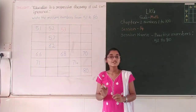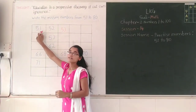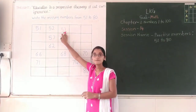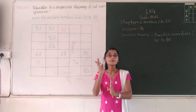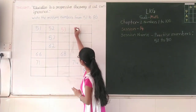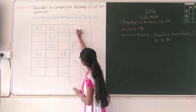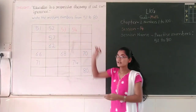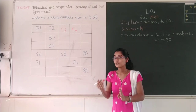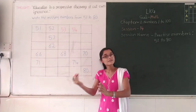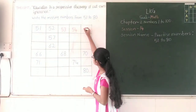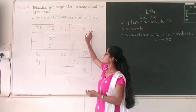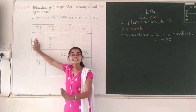After 53, which number will come? 54. So you have to write 54. Right? After 53. After 53, you have to write 55. Next. After 55, then 56. Right?